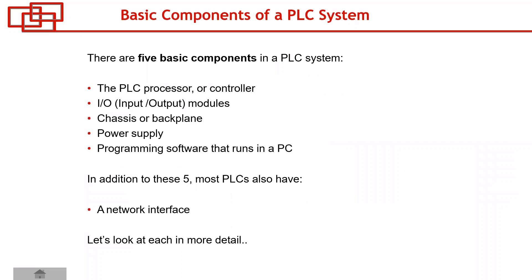When we talk about PLC major components, the first one is the PLC processor. The processor or controller is the brain. But when we talk about a PLC as a complete system, it has many components along with the processor — it has IOs, power supply, chassis, programming software, and a network interface. All these things connect together to make a PLC system. There are five basic major components in any PLC.